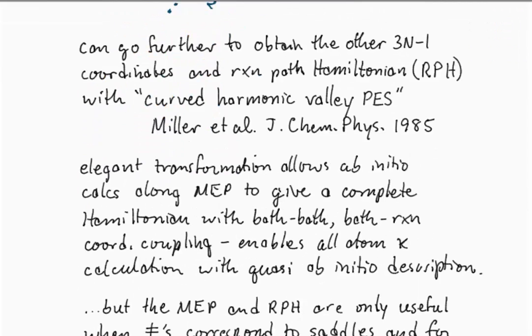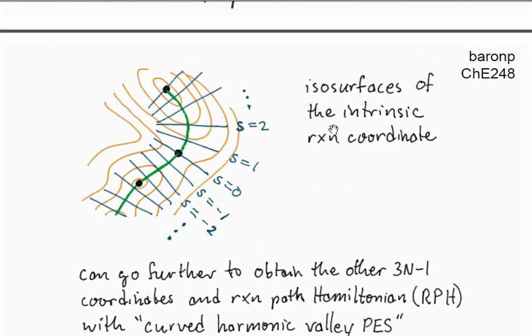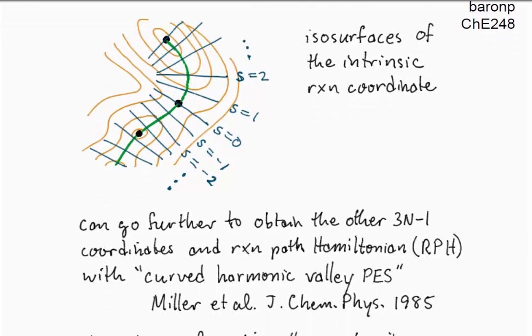Let me say a little bit about the reaction path Hamiltonian. You can go further, so we've taken every point in the three-N dimensional space, and we've come up with a prescription for determining a reaction coordinate, this intrinsic reaction coordinate S. Now, Miller, Handy, and Adams in J. Chem. Phys. 1985 developed this really beautiful framework for going further and developing a complete coordinate transformation that takes you from a set of Cartesian coordinates to the intrinsic reaction coordinate and a set of coordinates to describe the various bath modes.